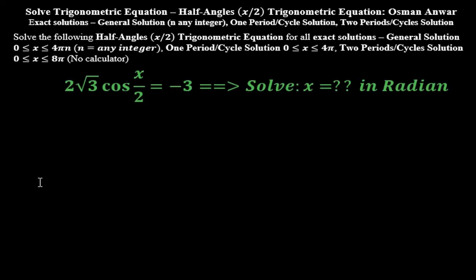The trigonometric equation is 2√3 · cos(x/2) = −3. We're going to solve for x in radians. Here is the detailed solution.